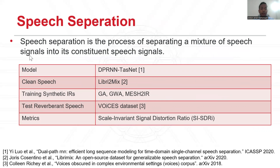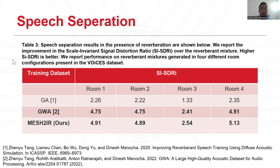Speech separation is the process of separating a mixture of speech signals into its constituent speech signals. We train a DPRNN task-oriented model using synthetic reverberant speech generated with LibriMix clean speech and different synthetic impulse responses. We test the model using recorded speech in four different room configurations in the Voices dataset, and use the SI-SDR metric to evaluate performance, where higher SI-SDR means better performance. The speech separation results also show that our Mesh2IR performs similarly to GWA across four different room configurations.